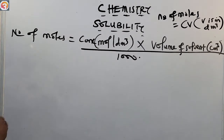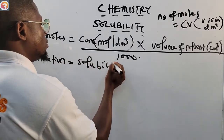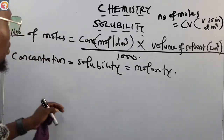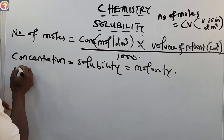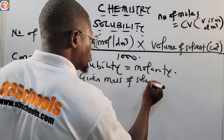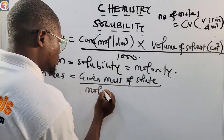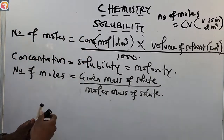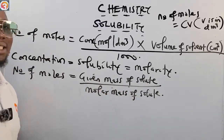We have already said that concentration is the same thing as solubility, which is the same as molarity. We also know that number of moles equals mass of solute over molar mass of solute. So: n = m/W, where m is mass and W is molar mass.